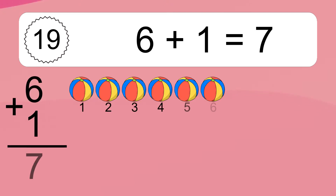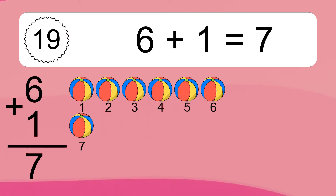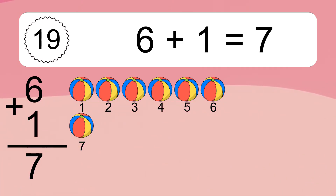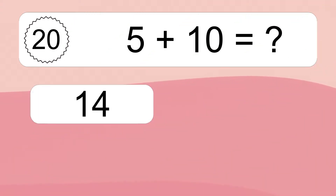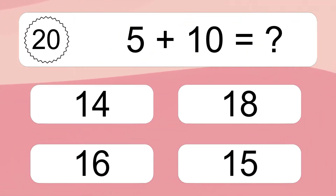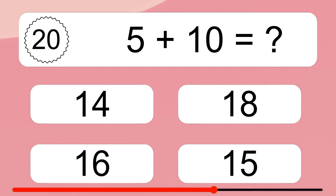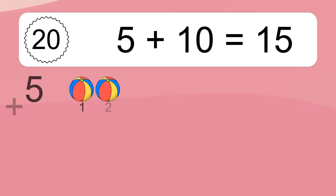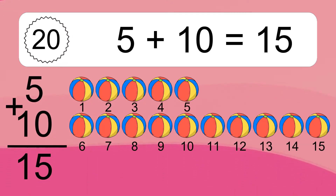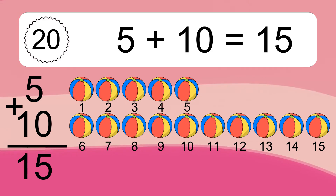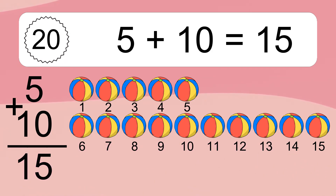6 plus 1 equals 7. Let's count it: 1, 2, 3, 4, 5, 6, 7. 5 plus 10 equals what? 5 plus 10 equals 15. Let's count it: 1, 2, 3, 4, 5, 6, 7, 8, 9, 10, 11.